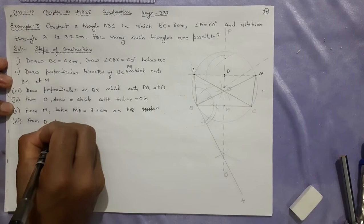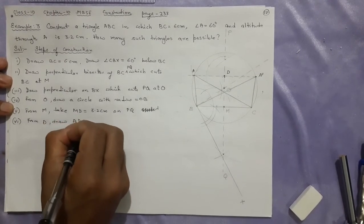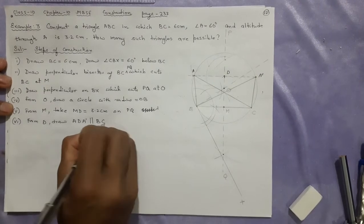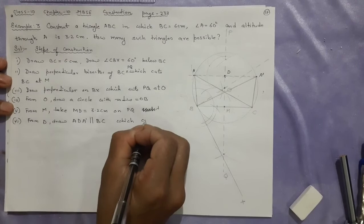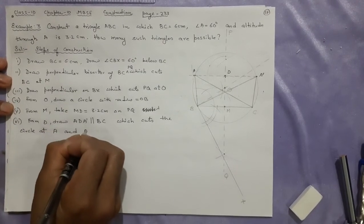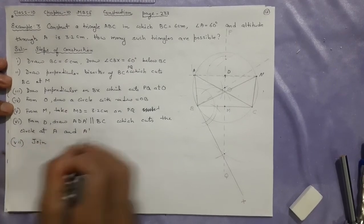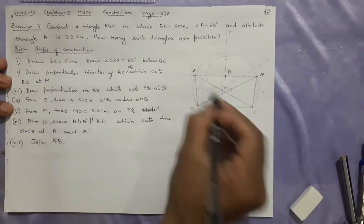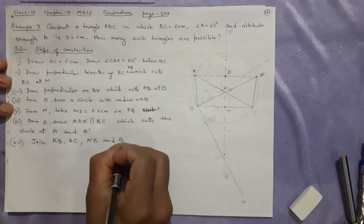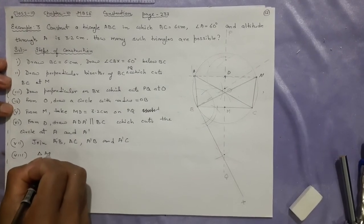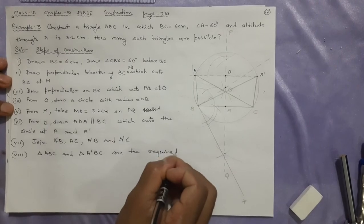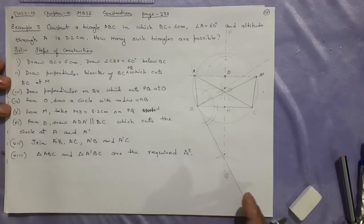From D, draw ADA dash parallel to, very important in this line, parallel with BC, which cuts the circle at A and A dash. Next step: Join AB, AC, A dash CB, and A dash C. Triangle ABC and triangle A dash BC are the required triangles. Triangles means plural. Okay, thank you.